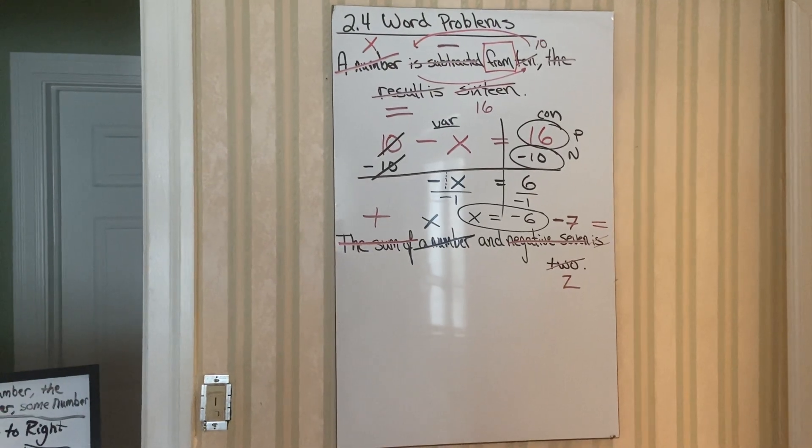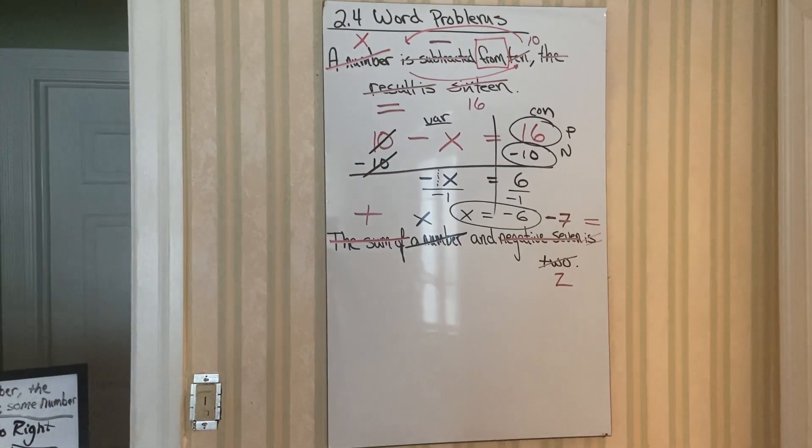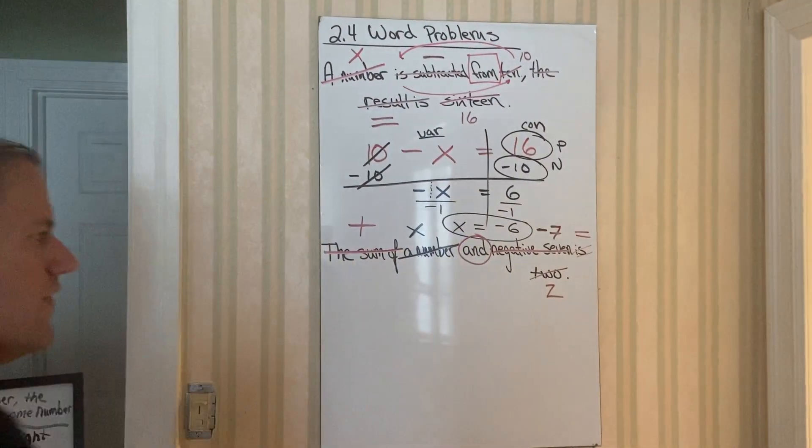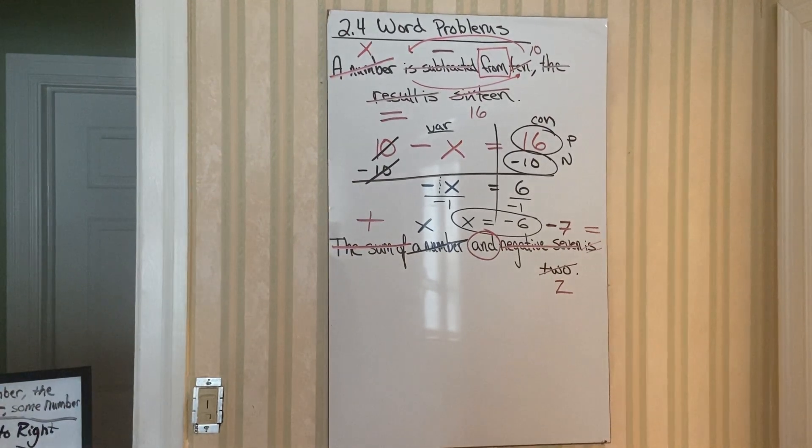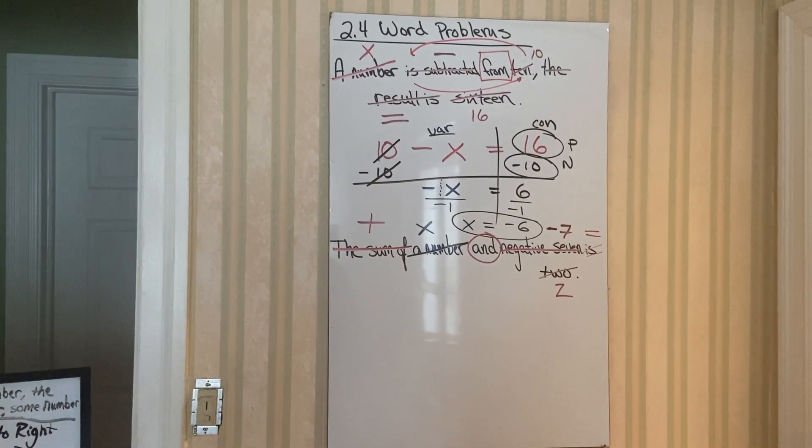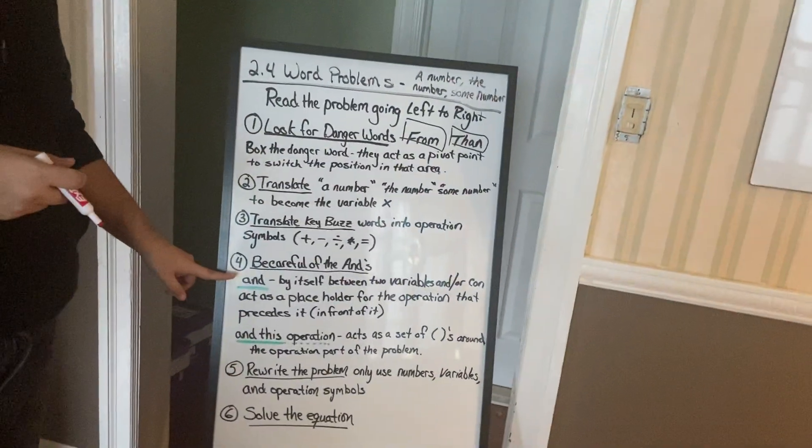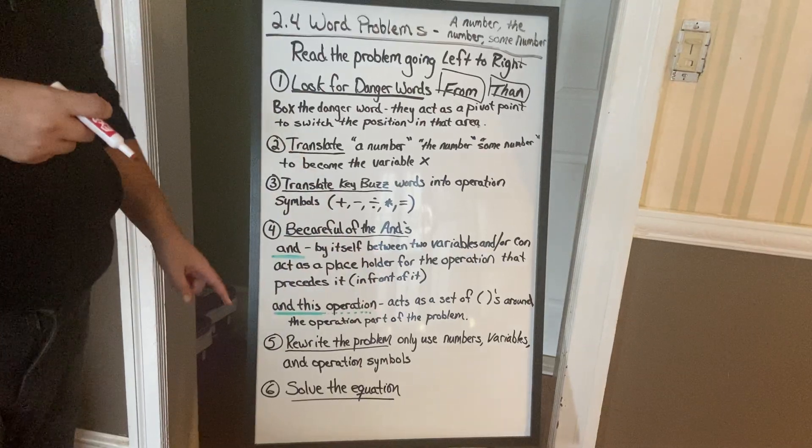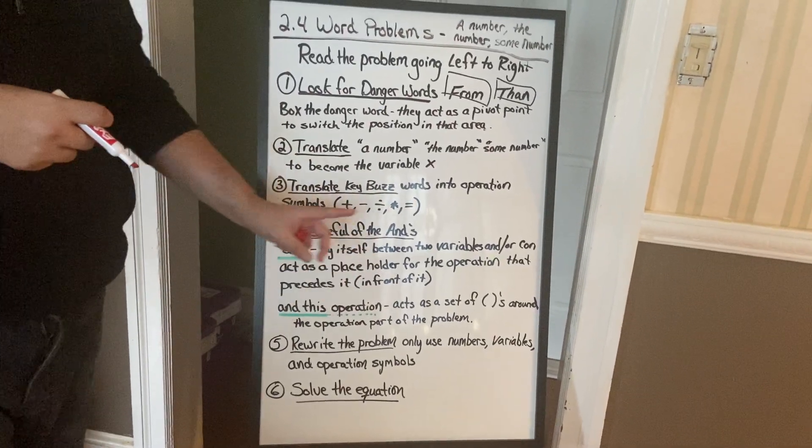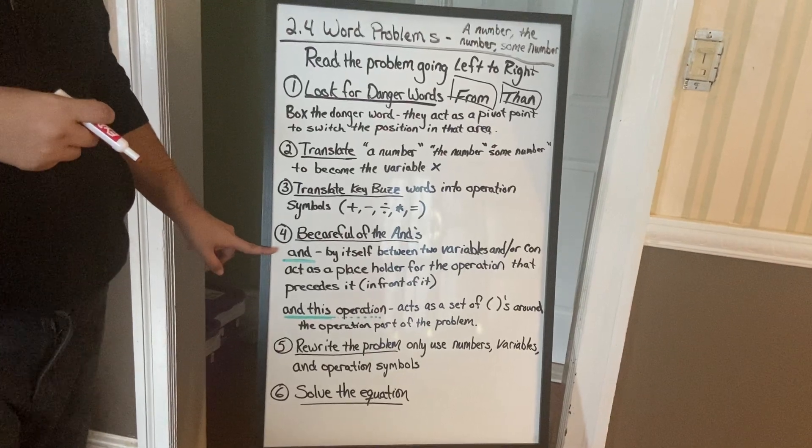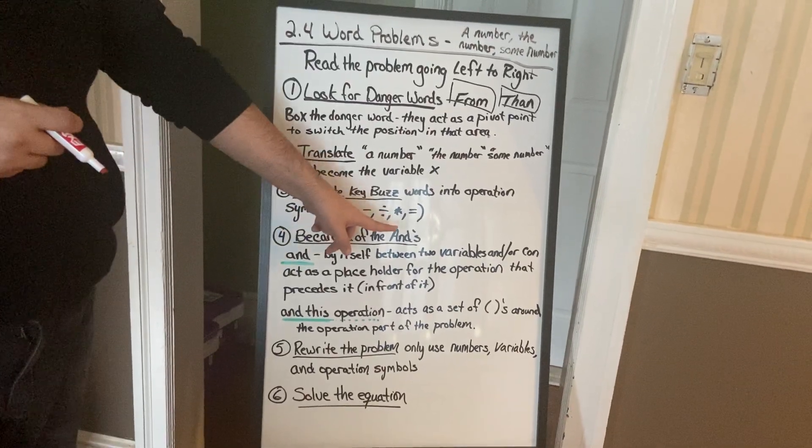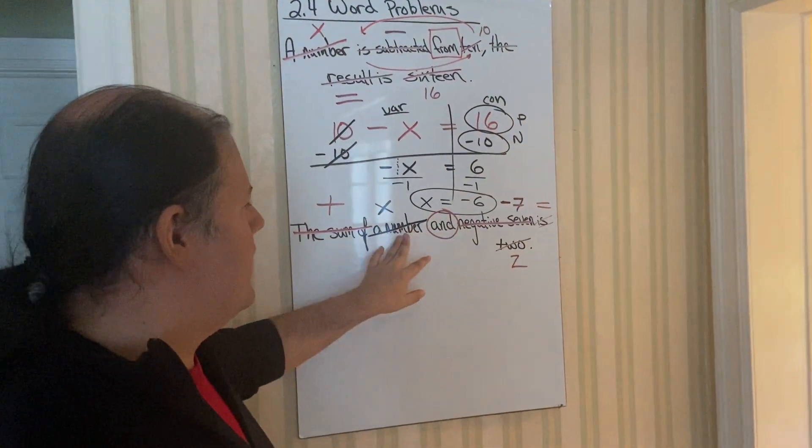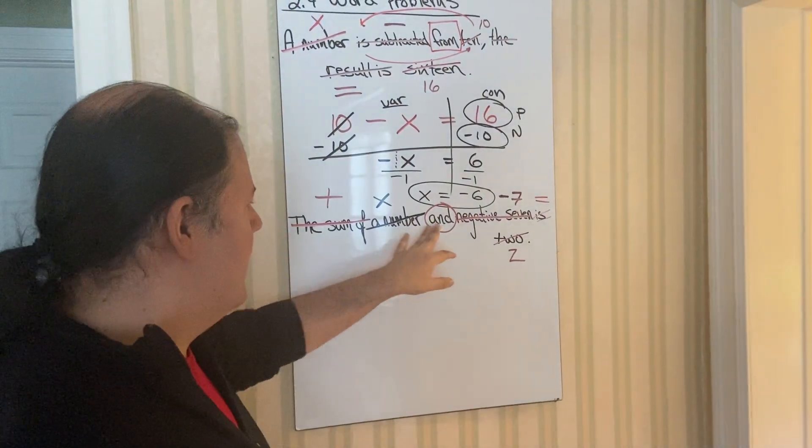The next thing I want to do is look to see if I have the word and. And this right here. This is the first guy that has an and in it. Now, what are we going to do with this and? We have to determine what type of and is it. Does it say and this operation? Like does it say and this addition or and this sum? Or is it by itself? Is it an and that is separated between two variables or two numbers? Let's see. We have an and. What's in front of it? A letter. What's behind it? Negative 7.